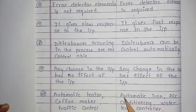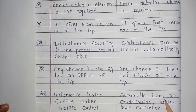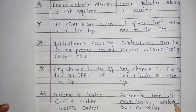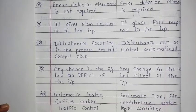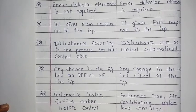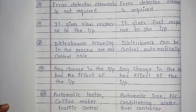Examples of closed loop control systems include automatic iron, air conditioning (AC), and water level controller. These are examples of open loop and closed loop systems.